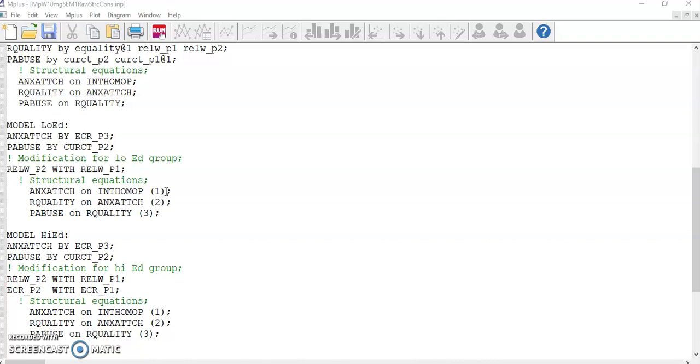So we need to repeat the structural equations and number the corresponding parameters consistently to set the equality constraint. In my command file, I numbered the path coefficient from internalized homophobia to attachment anxiety as 1 for both groups, so Mplus knows that I want them to be invariant between groups. I did the same for the other two pairs of parameters. Save and run.